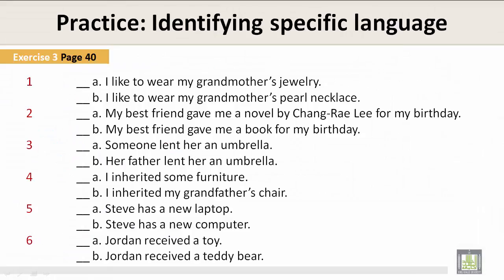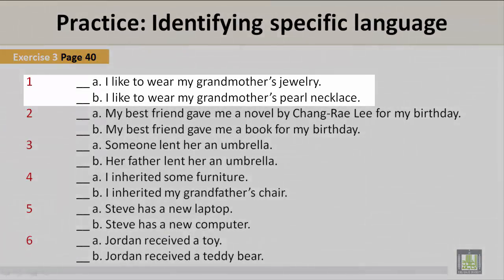Practice identifying specific language. Exercise 3, page 40. Number 1, A and B. I'll read both examples for you in each of the questions and then I will provide you with the answer. A: I like to wear my grandmother's jewelry. B: I like to wear my grandmother's pearl necklace. Which is more specific?